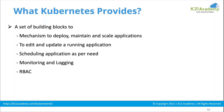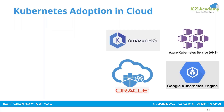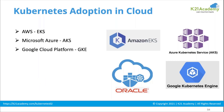Because everyone is shifting from virtual machines to the container world, all the bigger cloud providers have to provide solutions. Amazon was one of the first to provide Amazon EKS, then Azure came with Azure Kubernetes Service, we have Google Kubernetes Engine, Oracle's Container Kubernetes Engine, and DigitalOcean's Kubernetes Service as well.